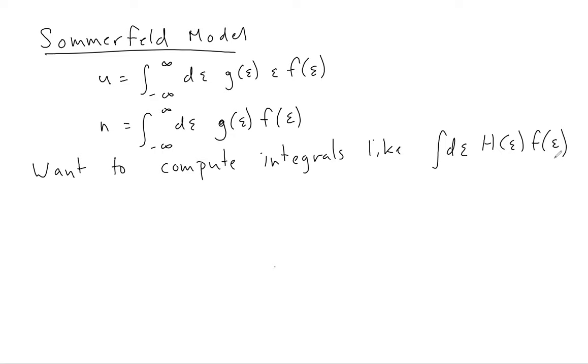The basic idea behind all of these approximations, this is called the Sommerfeld expansion, is to realize that at T equals zero the Fermi-Dirac distribution looks like this: it's a step function where the distribution is one for energies less than the chemical potential and zero for energies greater than the chemical potential.